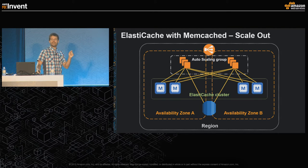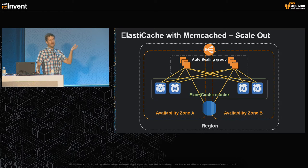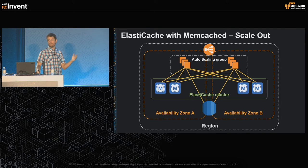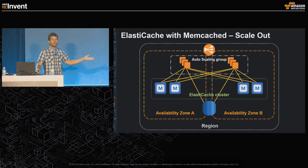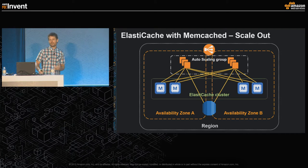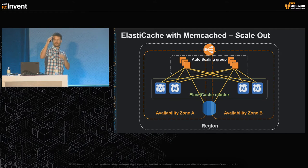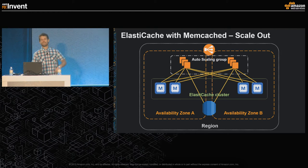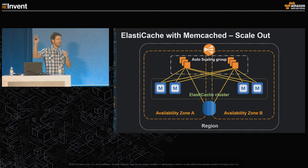There's a gotcha here: as you add cache nodes, remember Memcache has no persistence, so you're actually flushing part of your key space as you add nodes. Be careful not to suddenly go from four nodes to eight nodes, because you'll flush 50% of your cache — your database is just going to melt. So don't do that. Just gradually add them.